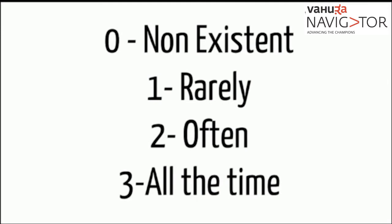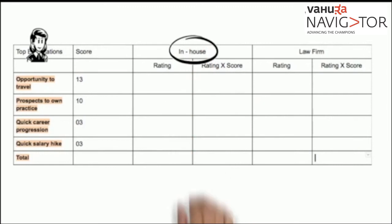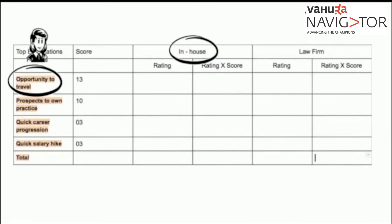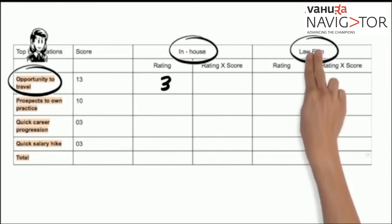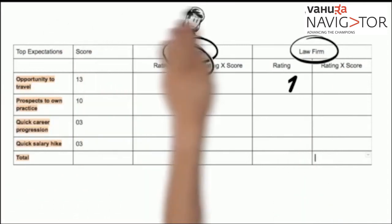For example, if Reshma feels that by being in an in-house legal department she will get more opportunity to travel, she can mark this option with a 3. However, this might not be true for a law firm based on her experience, so she will give it a rating of 1. Once you finalize the ratings, multiply each rating by the total score to receive the cumulative score for each career expectation.